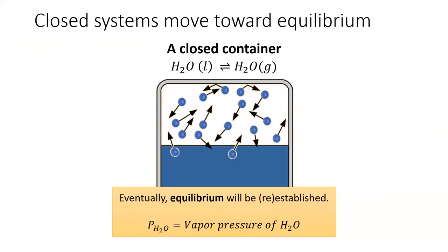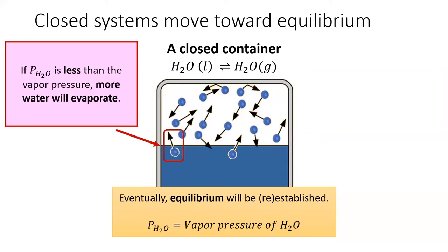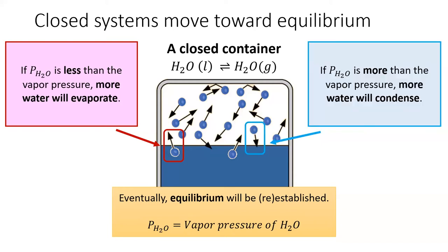Our closed system, such as our bottle of water, will move toward equilibrium naturally. If the partial pressure of water vapor is less than its vapor pressure, water will evaporate until equilibrium is established. If the partial pressure of water vapor is more than its vapor pressure, water will condense until equilibrium is reached.